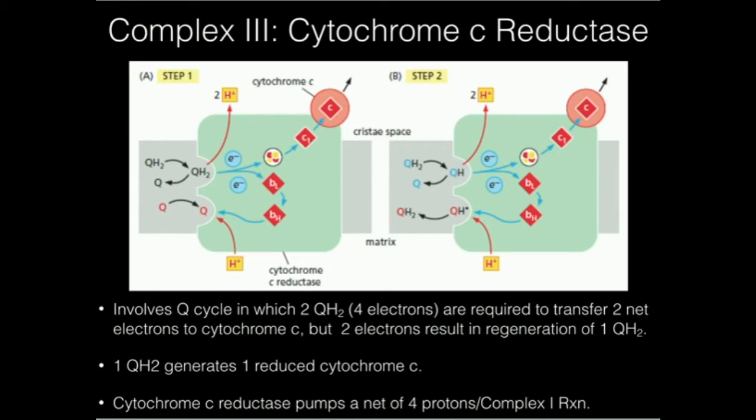Ubiquinol has two electrons that it's able to give up. However, when it gives up those electrons, one of them is going to go directly to cytochrome C. That's this one you see on the top. And one of them is going to be siphoned off for another purpose. Let's first look at the one that goes to cytochrome C.